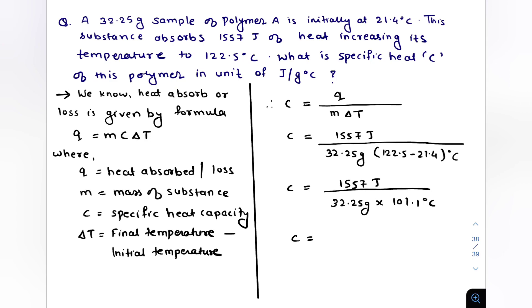And by calculating we will get the specific heat of the polymer having 32.25 gram weight and initial temperature 21.4 degree Celsius is 0.478 joule per gram degree Celsius.